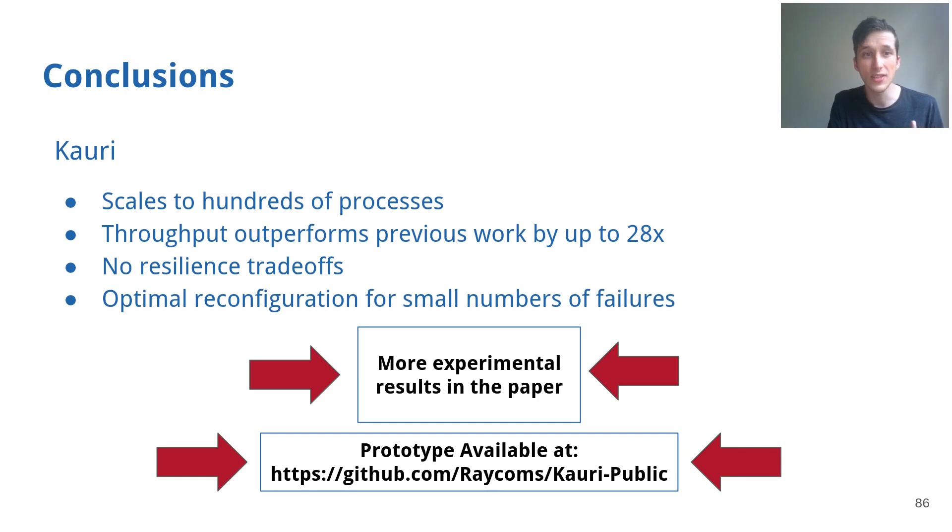Concluding, Kauri scales to hundreds of processes and outperforms previous work by a factor up to 28 times without requiring any resilience trade-offs and still offering optimal reconfiguration for small numbers of failures. You can find much more experimental results in the paper and we have a prototype available on GitHub. Thanks everyone for listening and I'm happy to answer any questions.